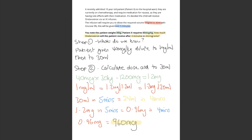Now we need to dilute the required volume at 1 mg per ml. So if it's 1 mg per ml, then it's 1.2 mg per 1.2 ml. And then it's been diluted to 30 ml of glucose, so it's 1.2 mg in 30 ml of glucose.